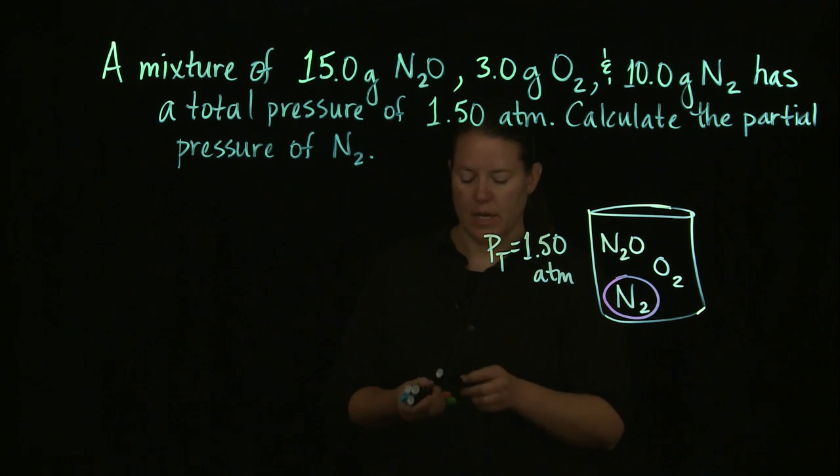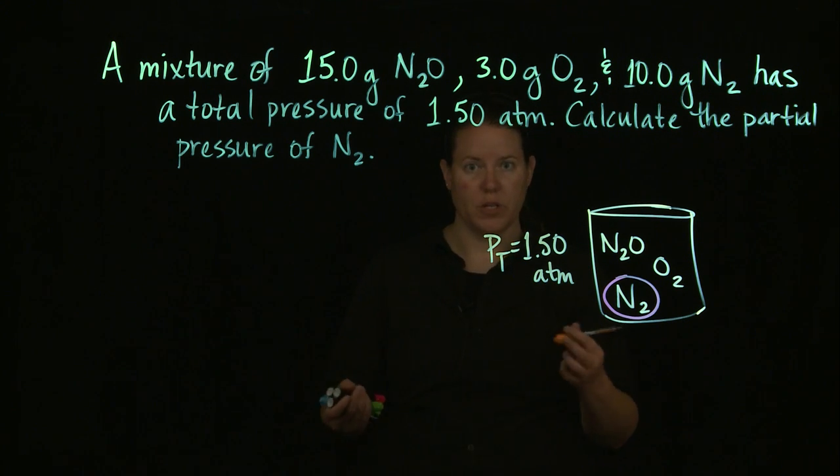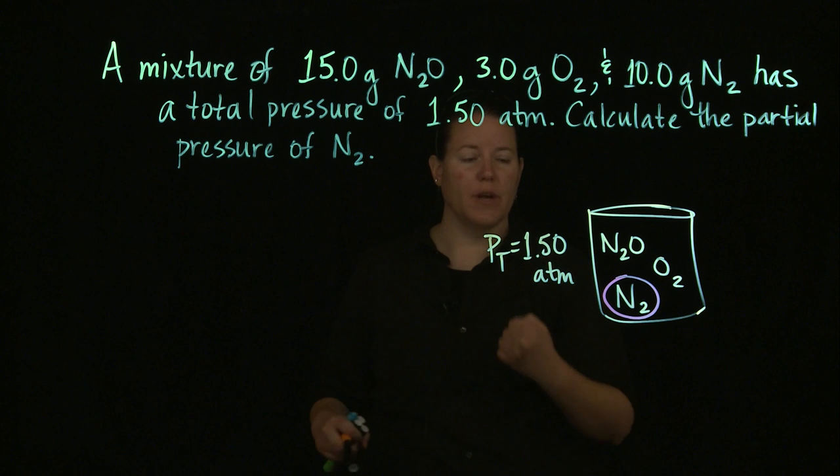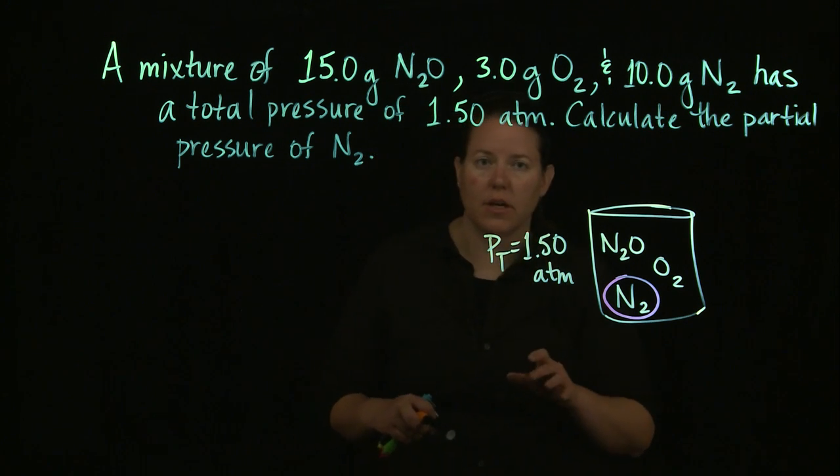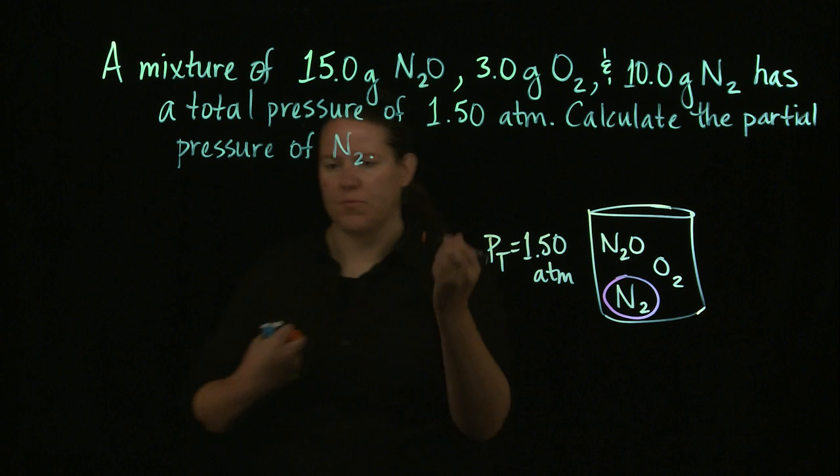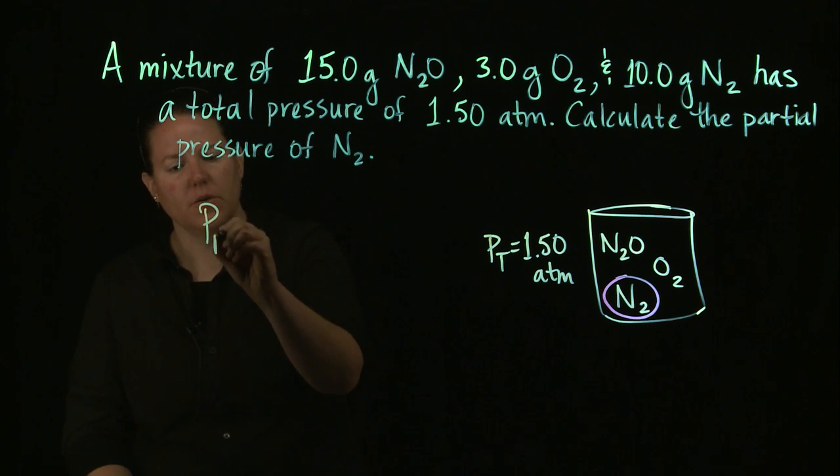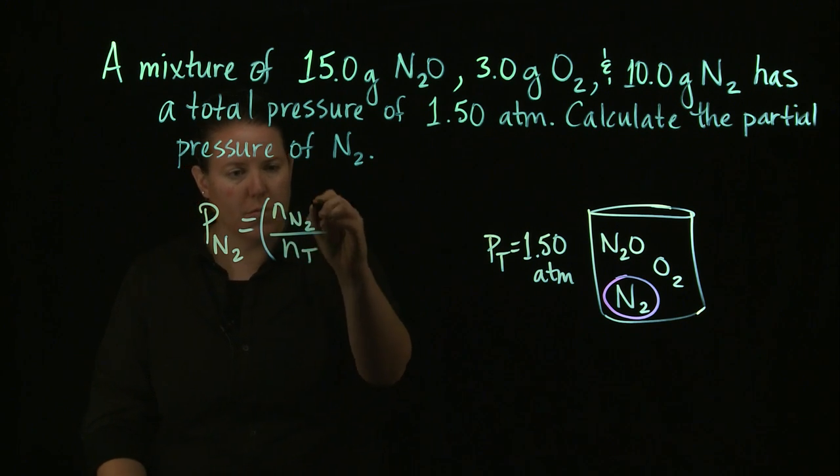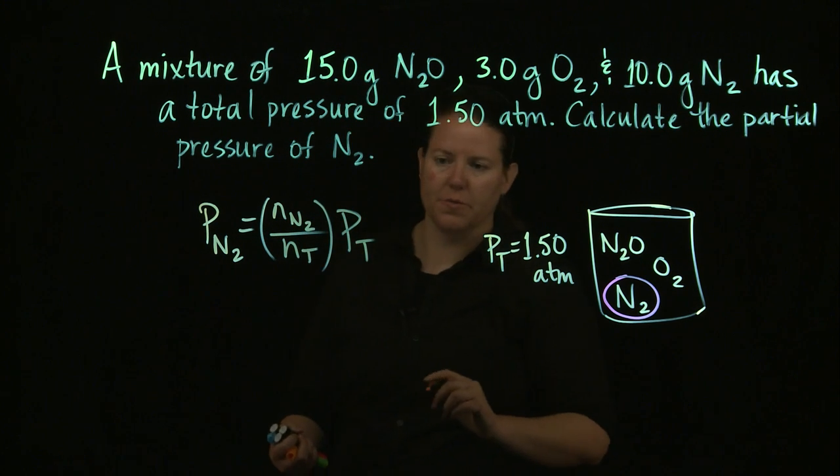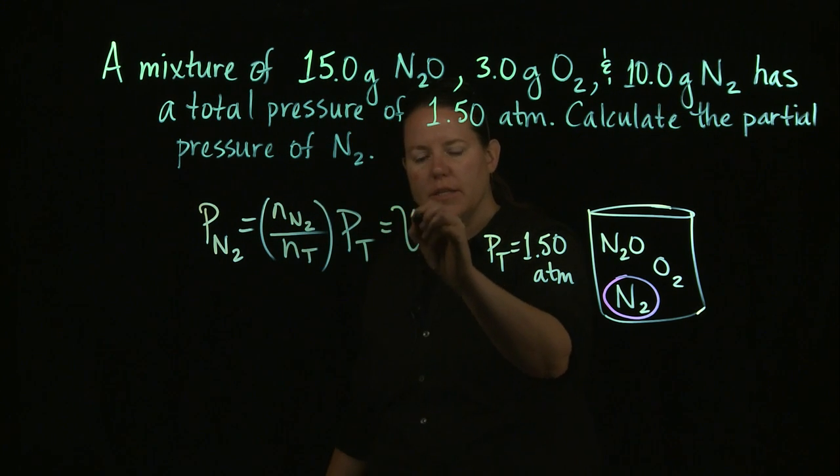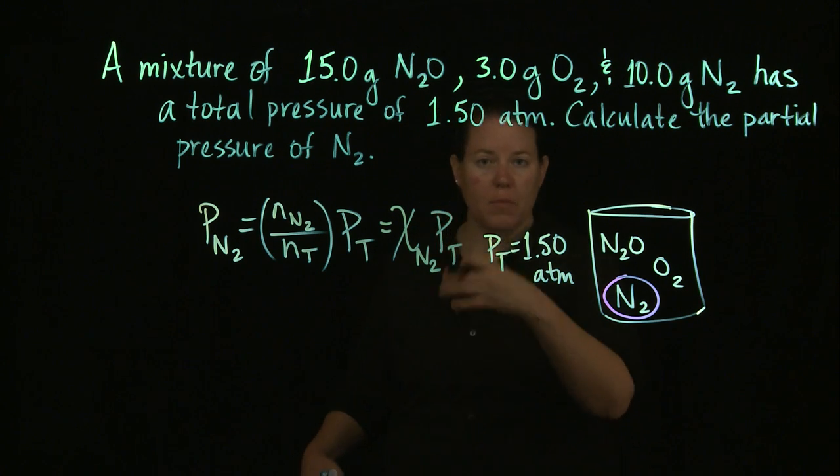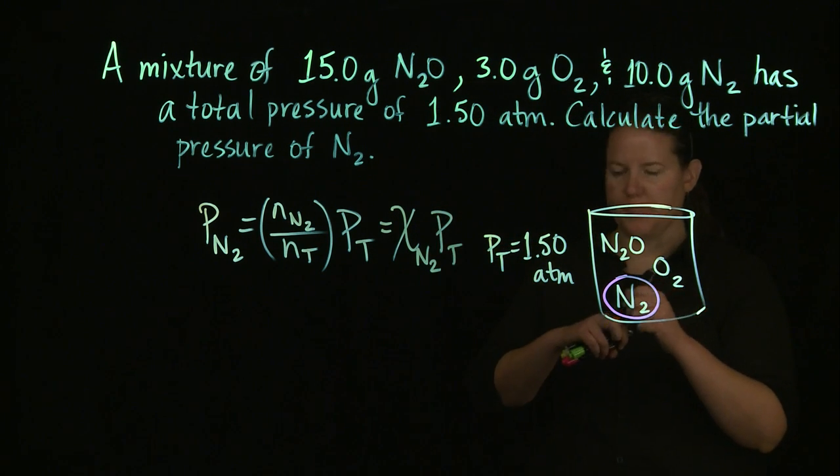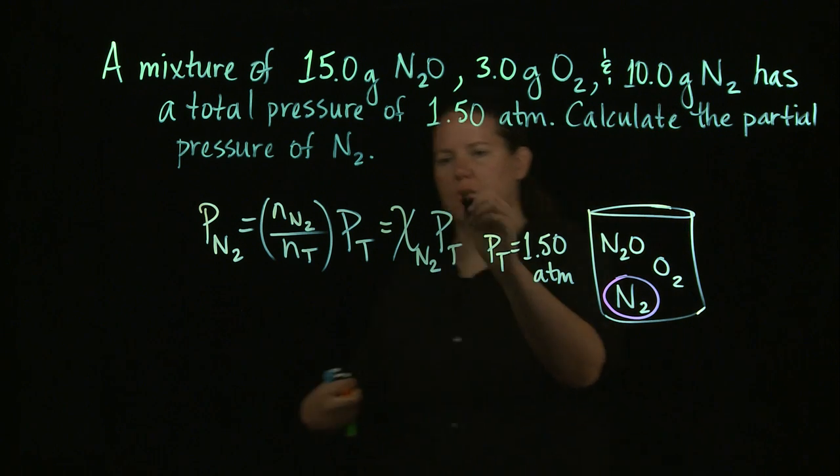Alright, so what I need here is I need to figure out which equation I'm using. I cannot use the ideal gas law here because in the ideal gas law you have to have a volume and a temperature. We do not have that. So we're going to do the partial pressure, that means we have to use the other one, is equal to the moles of N2 over the moles total times the total pressure, which we said last time, we've often given the capital Greek letter Chi to show the mole fraction. Okay, so this is the equation we're using.